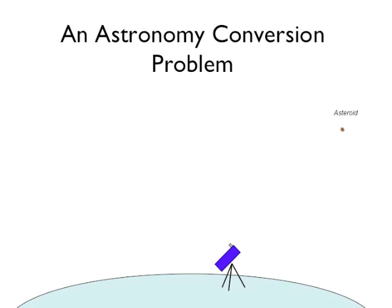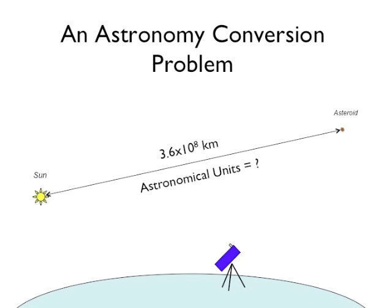Let's say you discover a new asteroid orbiting the Sun at a distance of 3.6 times 10 to the 8th kilometers, but you need to know the distance in astronomical units.